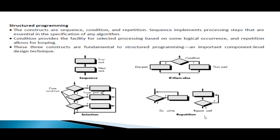For repetition, there are two constructs: while and do-while. A while loop means you check the condition first before executing statements. Statements execute until the condition is false. For a do-while loop, the statement is executed first, then the condition is checked. We execute the statements in the body of the loop until the condition becomes false.